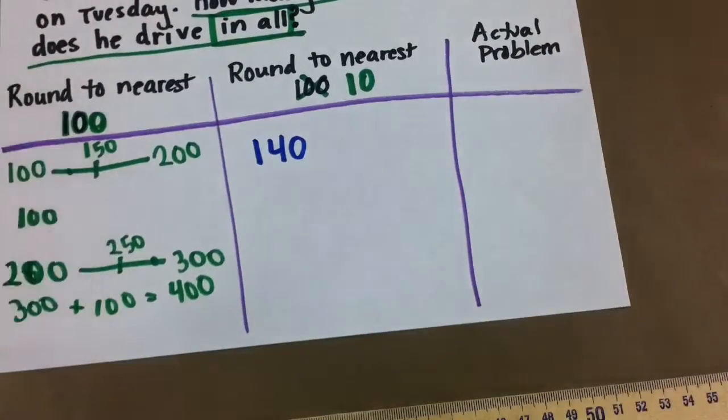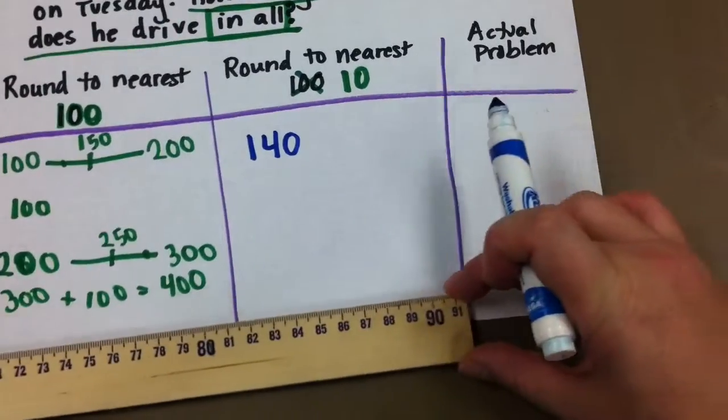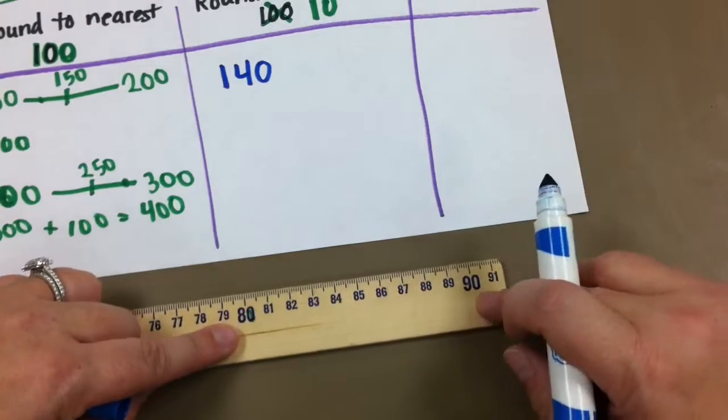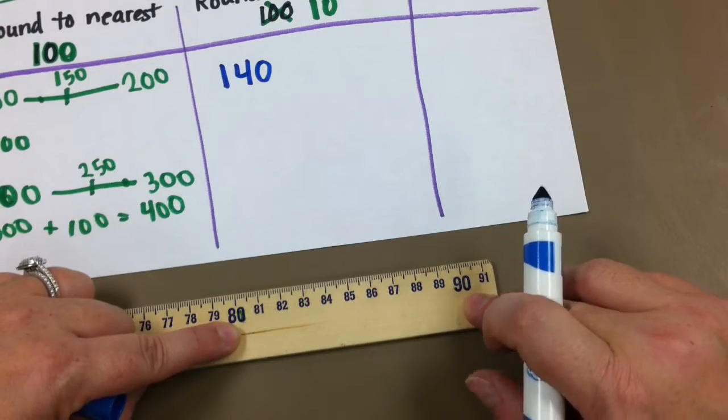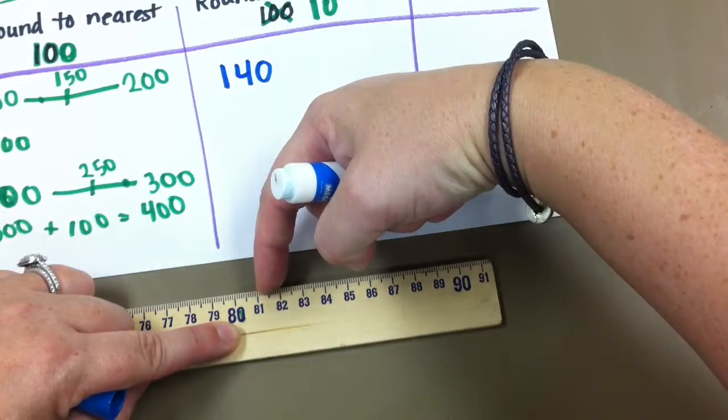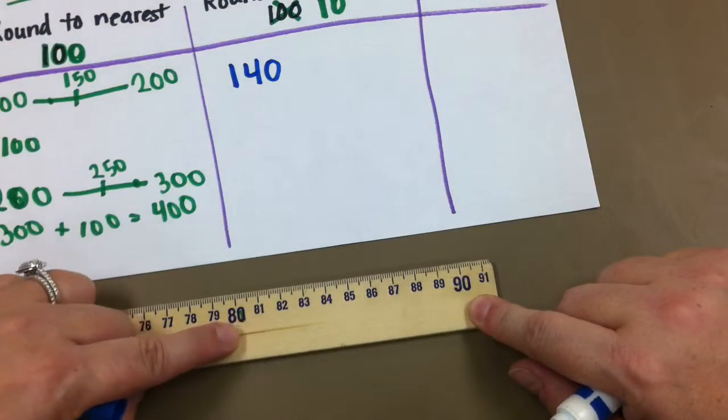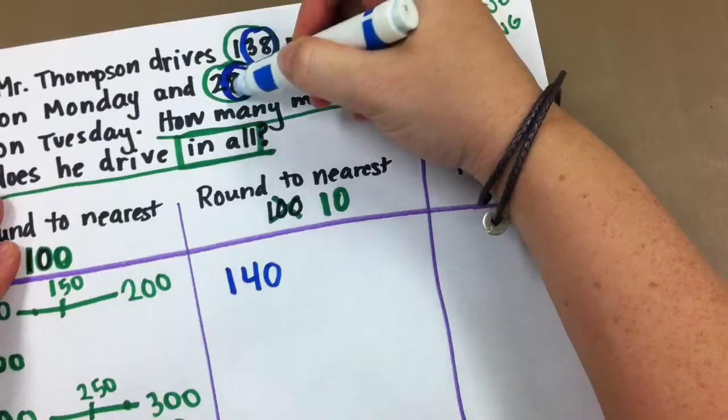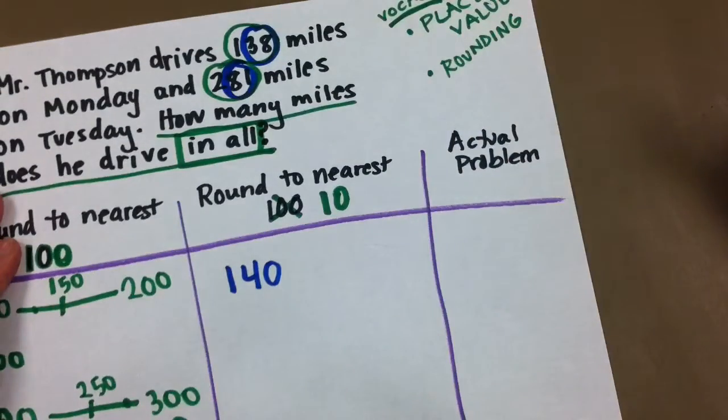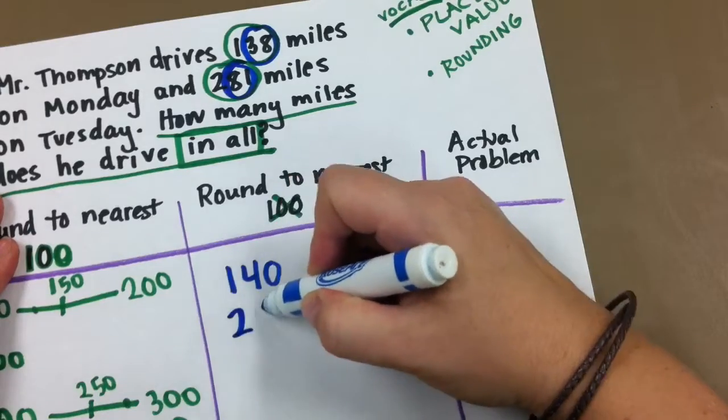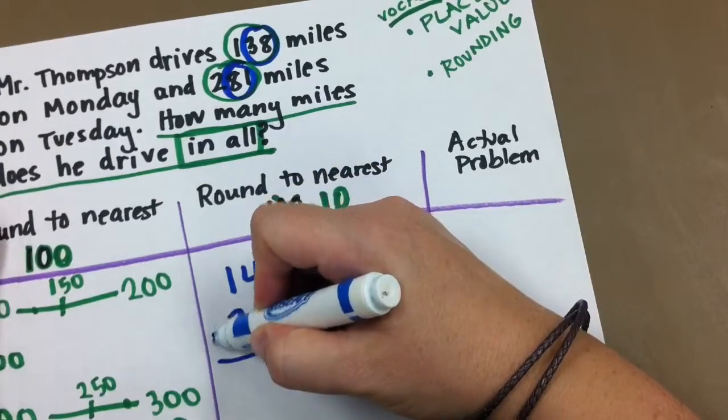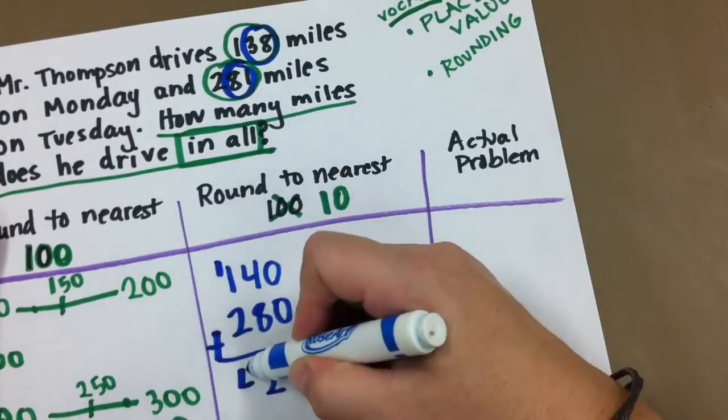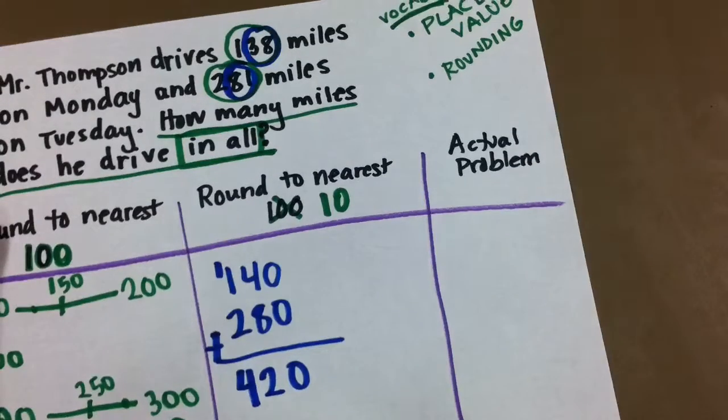The next number, 281. All right. So what two numbers, what two 10s is that in between? It's in between the 80 and the 90. Okay, and you see 81 here. 81 is here. Is it closer to the 80 or to the 90? Okay, it's very close to the 80. So 281 rounds, 81, 281 rounds to the nearest 10 at 280. And now we add that and get 420. The next video, we'll do the actual problem.